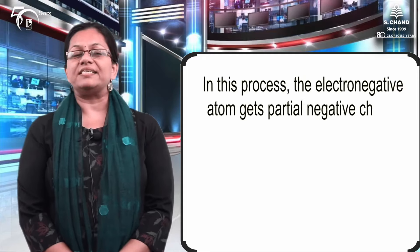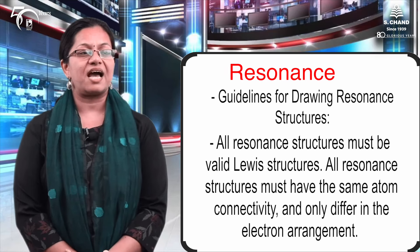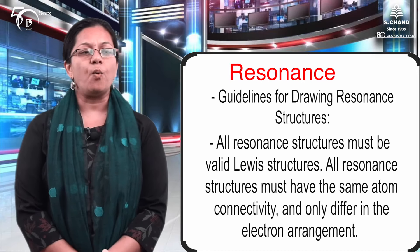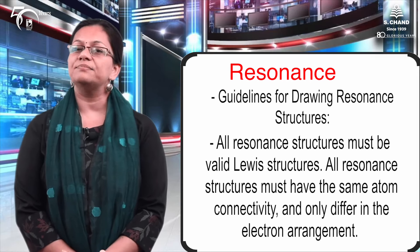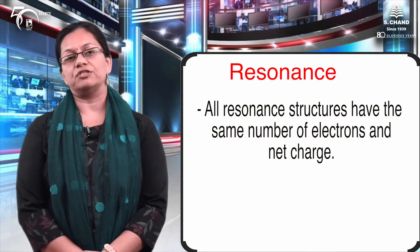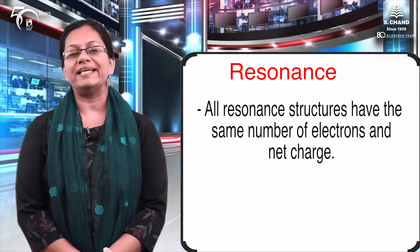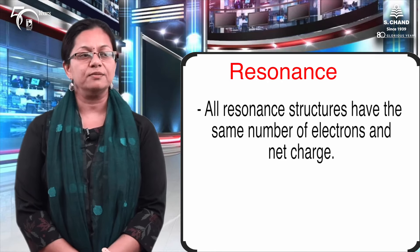For drawing resonance structures, we need to consider certain guidelines. All resonance structures must be valid Lewis structures. The number of electrons in one structure must be the same in all resonating structures — you cannot change the number of electrons. All structures must have the same atom connectivity and only differ in the placement of electrons. The atoms never move; only the electrons move. Atoms as such do not relocate, so atom placement does not change — only electrons move from one atom to another.